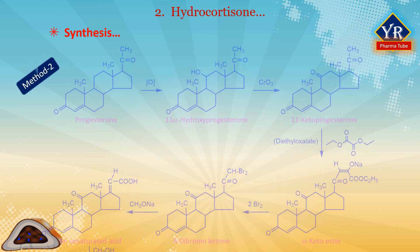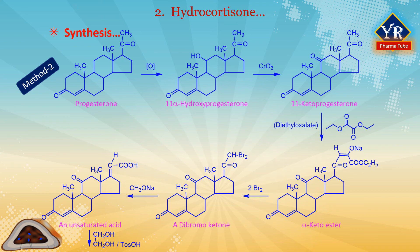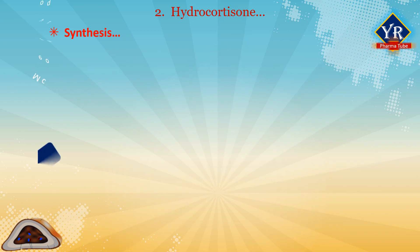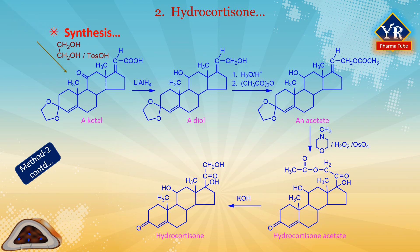In the second method of making hydrocortisone, progesterone is used as the starting substance. In the first stage, progesterone undergoes microbiological oxidation analogous to that described in the first method, forming 11-alpha-hydroxyprogesterone. The resulting hydroxyl group is oxidized by chromium oxide in acetic acid, giving 11-ketoprogesterone. This is reacted with diethyl oxalate in the presence of sodium ethoxide, forming the corresponding alpha-keto ester in the form of a sodium enolate, which undergoes bromination by two equivalents of bromine giving the dibromo ketone. The resulting dibromo ketone undergoes a Favorskii rearrangement and is further hydrolyzed giving an unsaturated acid. The carbonyl group at C3 is ketalized using ethylene glycol in the presence of p-toluenesulfonic acid, during which a migration of the double bond between C5 and C6 takes place, forming a ketol.